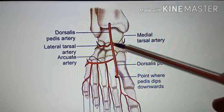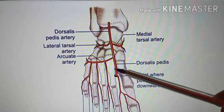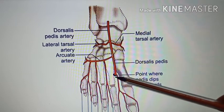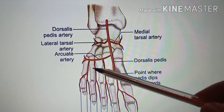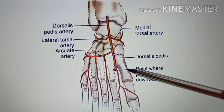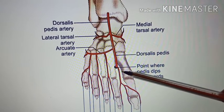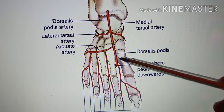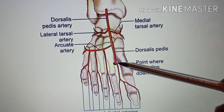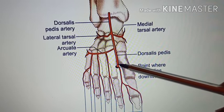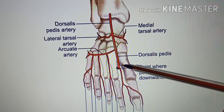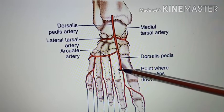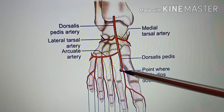Then it passes forwards along the medial side of the dorsum of the foot to reach the proximal end of the first intermetatarsal space. These are the metatarsals, and the space between the first metatarsal and second metatarsal is called the first intermetatarsal space. It reaches up to the proximal end, and here it dips downwards between the two heads of the first dorsal interosseous muscle to enter the sole of the foot.